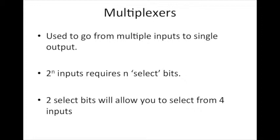This means that from 2 to the n inputs we can choose one of them using what's called select bits. So for 2 to the n inputs we need n select bits, meaning if we have two select bits we can choose from four separate input values.